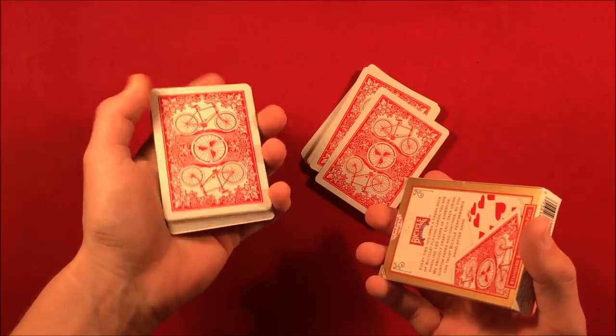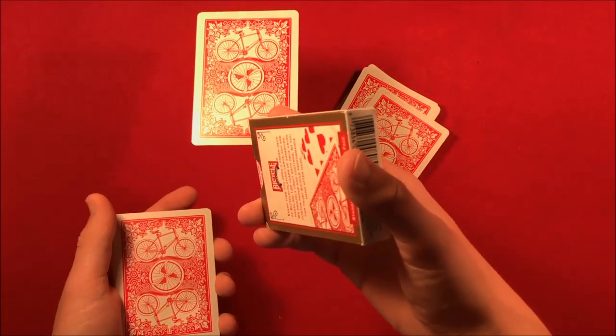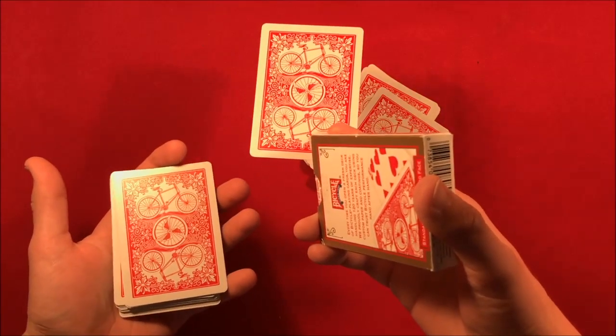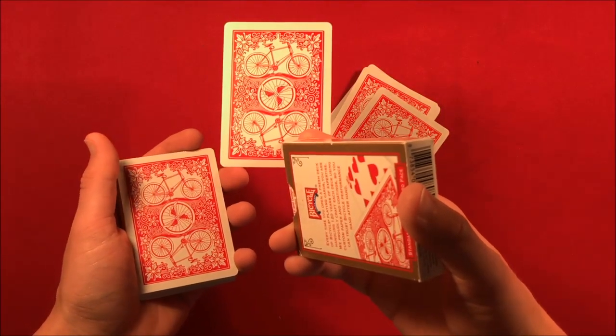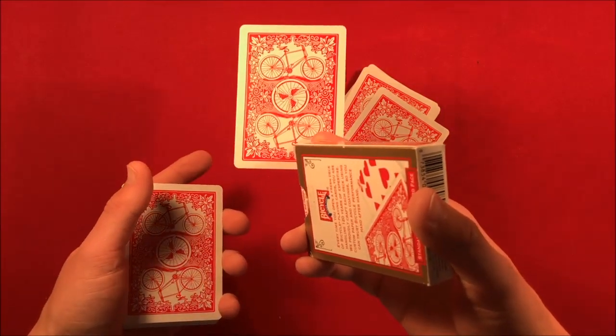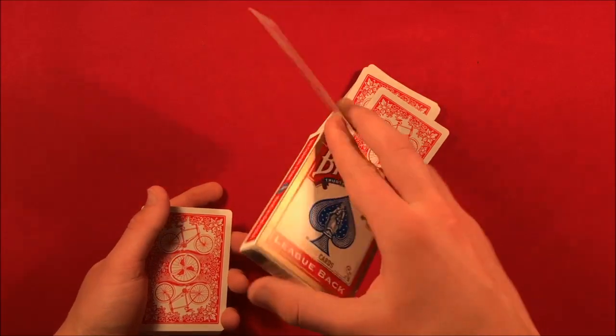So you tell them, go ahead and take the card off. And they're going to take it off. And you can do whatever you want from here, or you can just leave this as a separate trick on its own. You can say, you know what, I think you might have picked the four of diamonds, and they flip it over. And it's the four of diamonds.